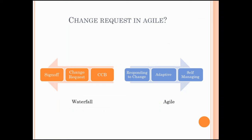You might be thinking, what is this topic? Change request and agile — that doesn't sound right. Typically we have waterfall, which is going in one direction, where we talk about terminologies like sign-off of requirements, having a change request, or having a change control board, and basically controlling any change in the environment. When we have a requirements document, we like it to be signed off, and then any changes requested by our customer or product owners, we would like to control them.